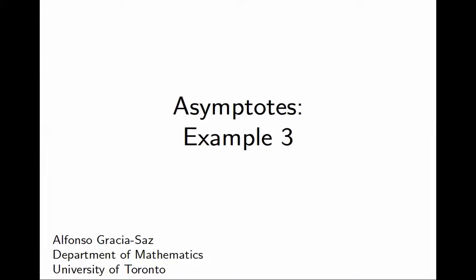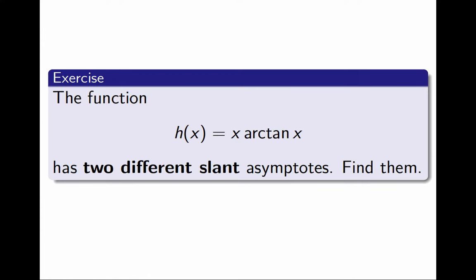This is my third example of how to find the asymptotes of a function given its equation. It is significantly harder than the previous two examples. I will work with the function h defined by the equation h equals x arctan x. This function has two different slant asymptotes.